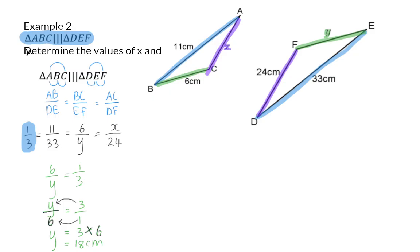Similarly, to solve X, I am going to set up another equation. So X over 24 should also be the same ratio of a third. Again, to solve X, I am going to multiply, and this time it will be a third multiplied by 24. That is similar to saying 24 divided by 3, which means that X is 8 centimeters.